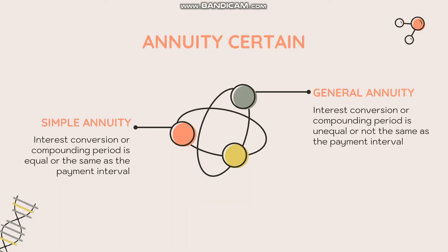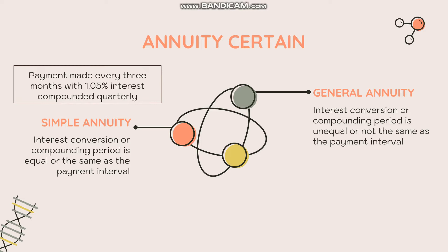For simple annuity, the interest conversion or compounding period is equal to the payment interval. An example would be payment made every three months with 1.05% interest compounded quarterly — your payment interval is every three months, and the compounding period is also quarterly, so they are the same.